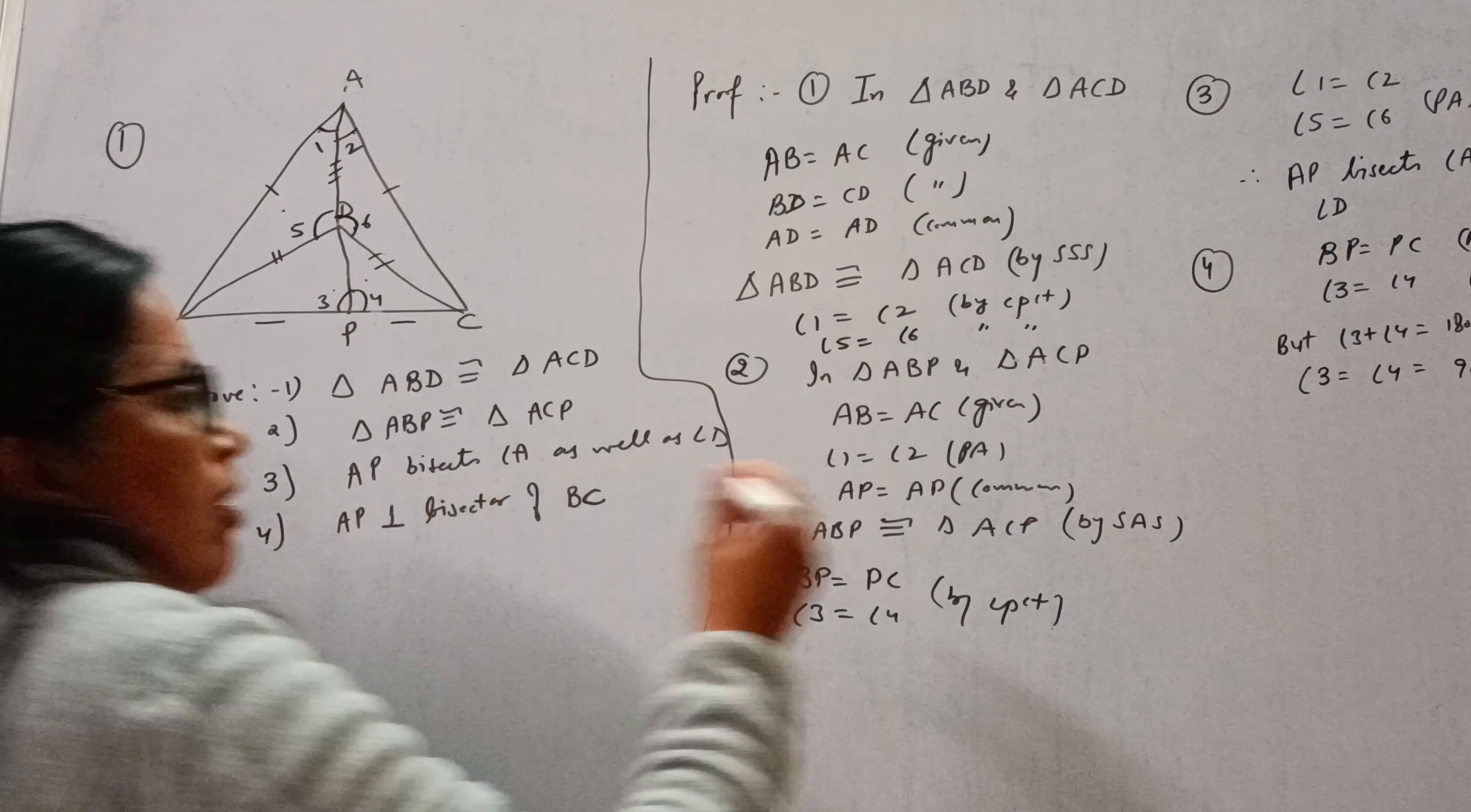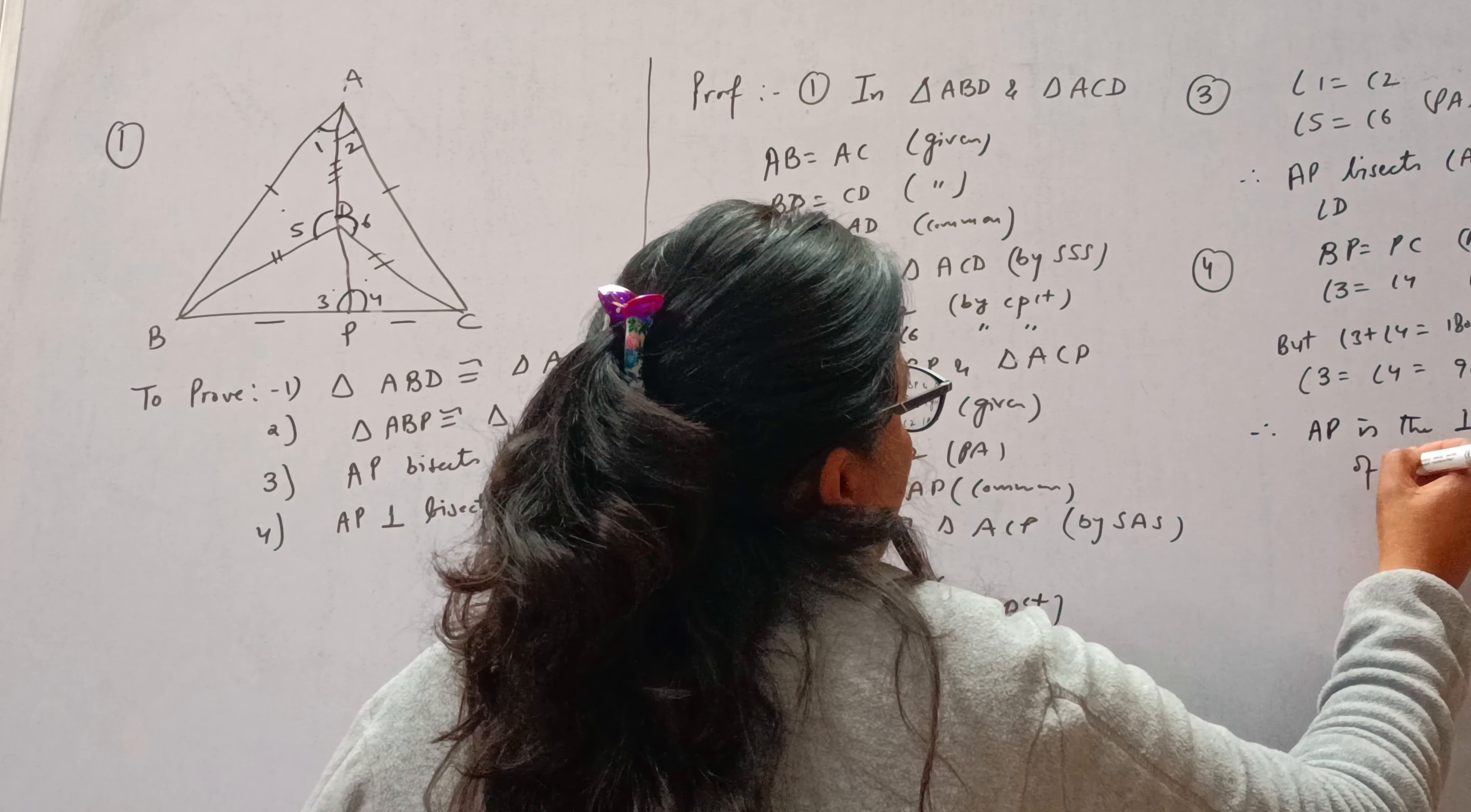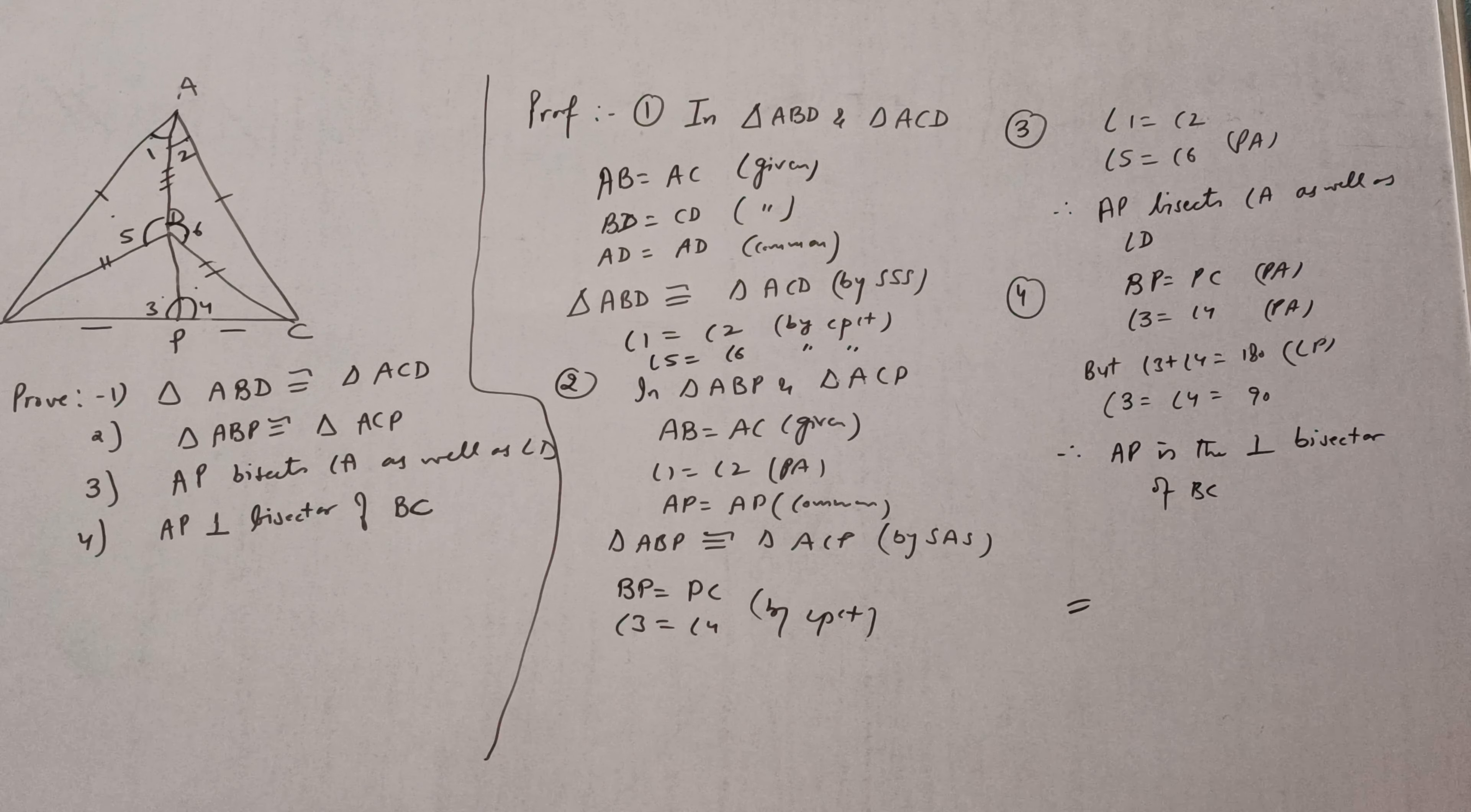Now if these angles are of 90 degrees and BP is equal to PC, then we can write AP is the perpendicular bisector of BC. Hence proved. This is question number 1 of exercise 7.3. I hope you all have understood. Thank you for watching. Have a nice day.